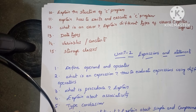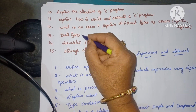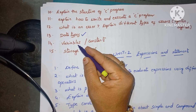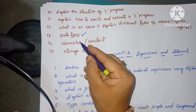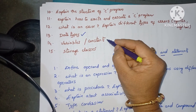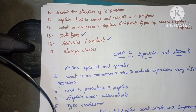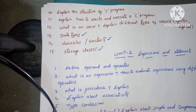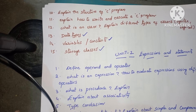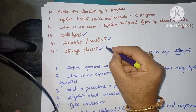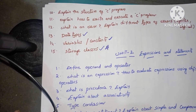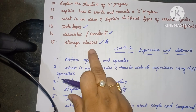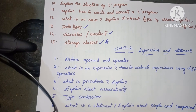Data types: 'What is a data type?' and 'Explain the different types of data types.' Next: 'What is a variable?' and 'What are the rules used for naming a variable?' Next: 'What is a constant?' and 'Explain the different types of constants' — very important questions. Storage classes: 'What is a storage class?' and 'Explain the different types of storage classes' — this is a very very important question.